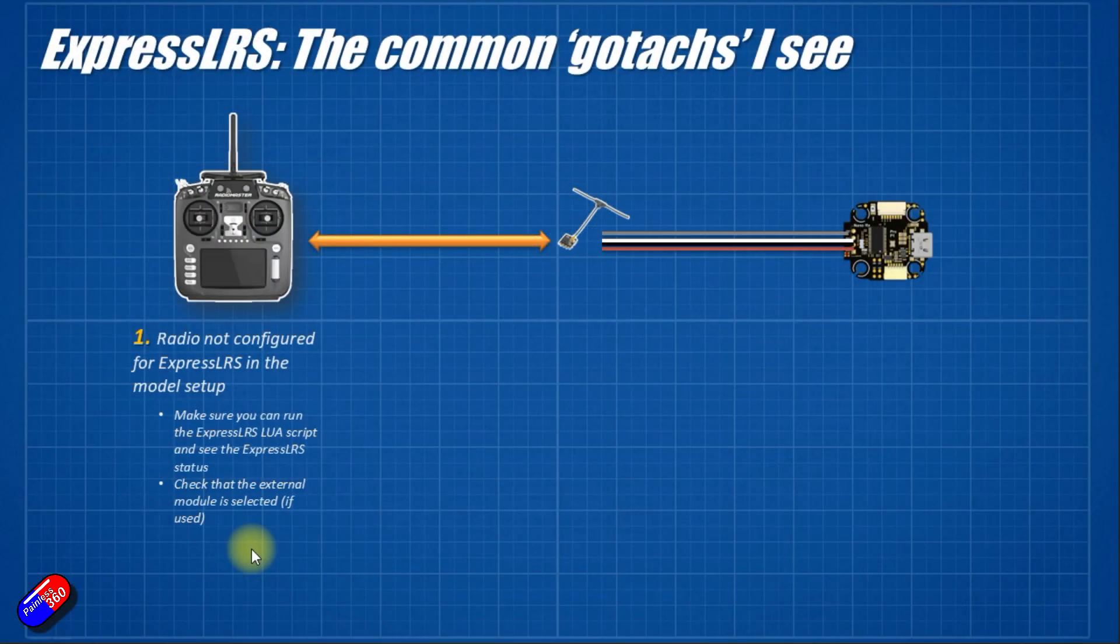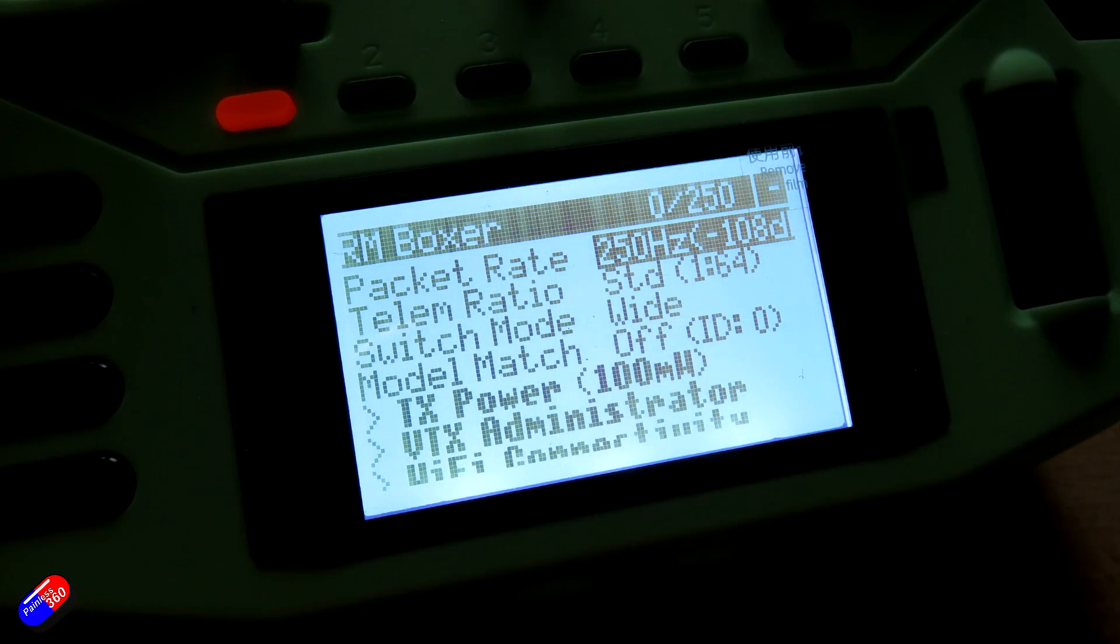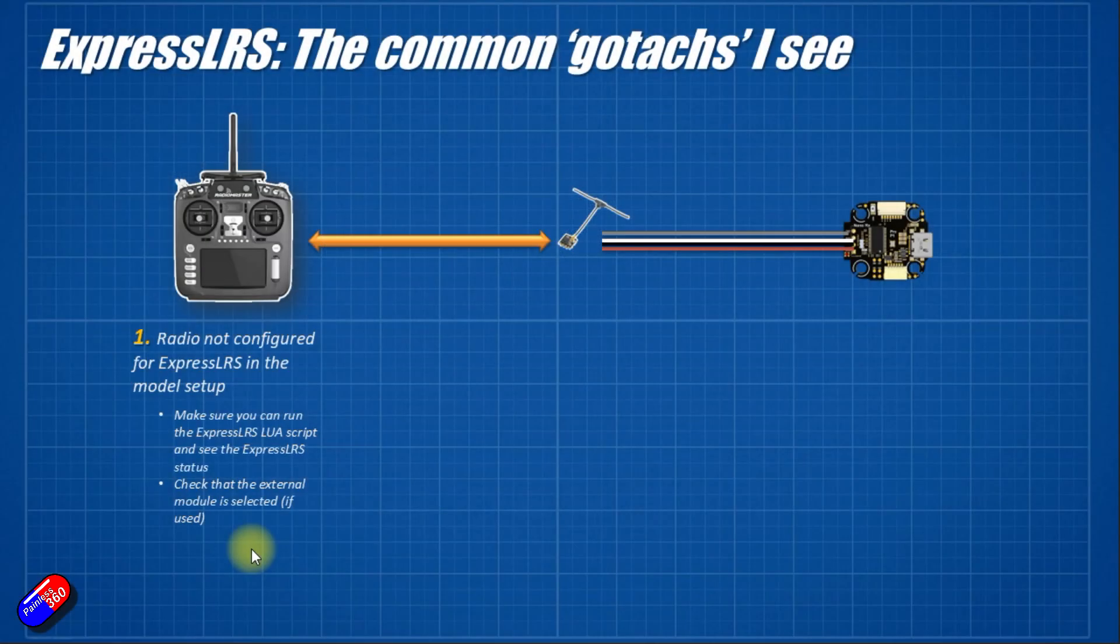Once you have that configured for the model, and this is a setting that's typically model by model on things like HTX, then once you have that set up, you should be able to go into the menus, into the system menus, find the ExpressLRS Lua script and run it and for it to populate like this. That is step one.